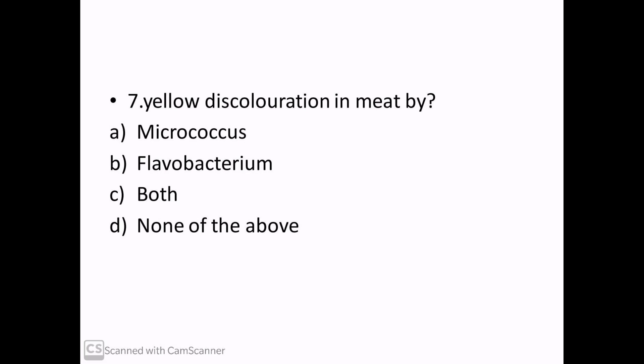Yellowish discoloration in meat by: Micrococcus, Flavobacterium, both, or none of the above. Correct answer: Option C, both, Micrococcus and Flavobacterium.